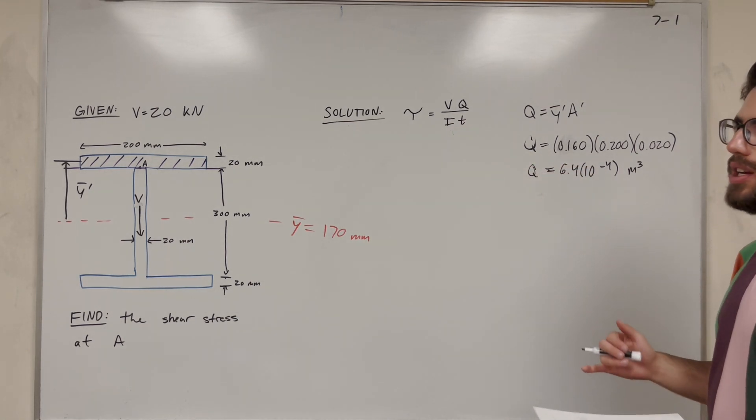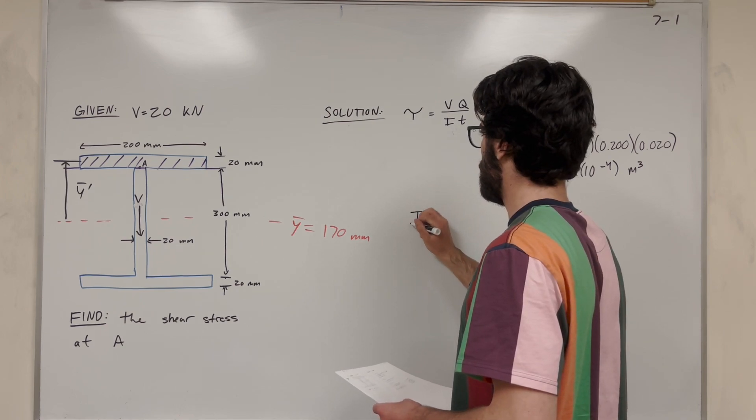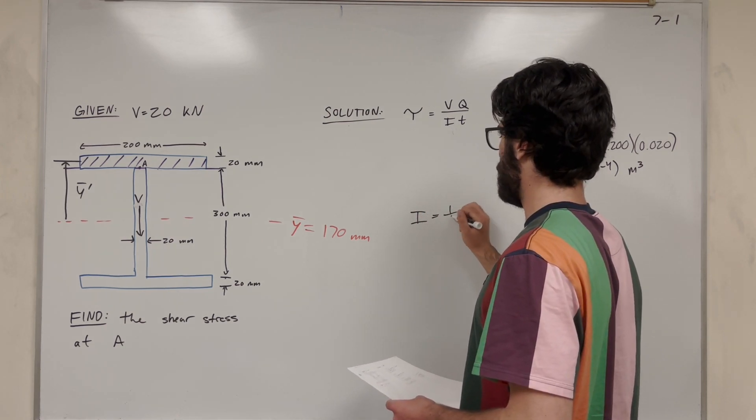We have I on the bottom. So I is the moment of inertia. So let's go ahead and solve for the moment of inertia. We're going to use parallel axis theorem.